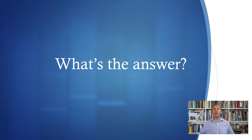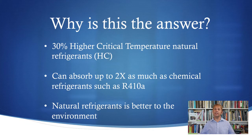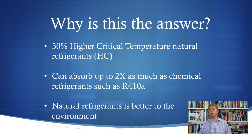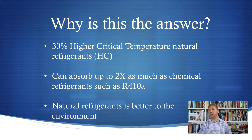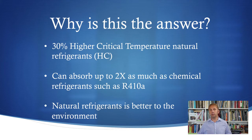So what's the answer? Air conditioning units running on natural refrigerants — that's the answer. Why? An inverter machine running on a natural refrigerant like hydrocarbons has a 30% higher critical temperature, so you don't have those problems on hot days. Secondly, hydrocarbons can absorb up to twice as much heat energy per kilogram as old chemical refrigerants like R410A. Thirdly, because hydrocarbons are natural refrigerants, they're better for the environment than chemical or F gas refrigerants. And of course, hydrocarbon refrigerants are cheaper.